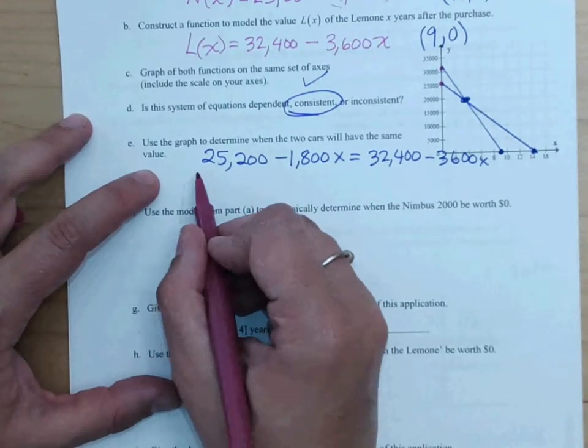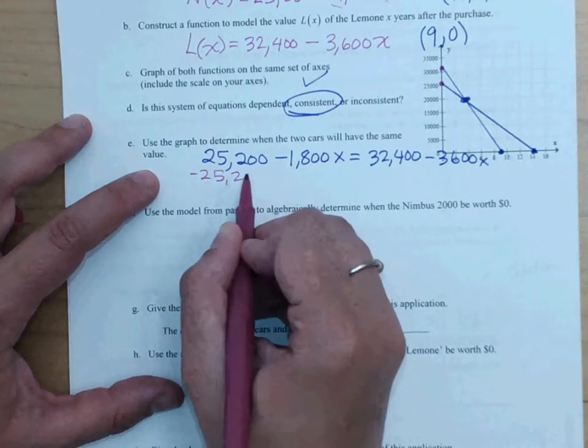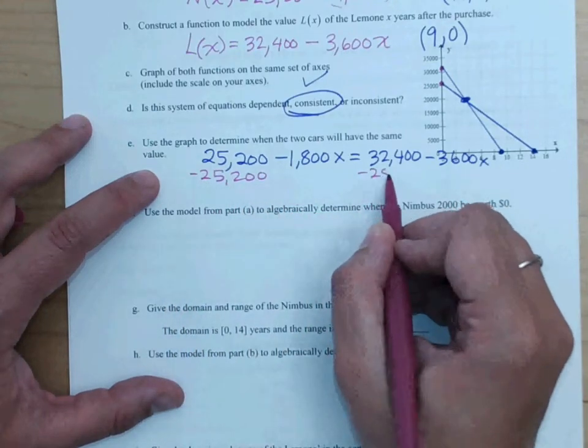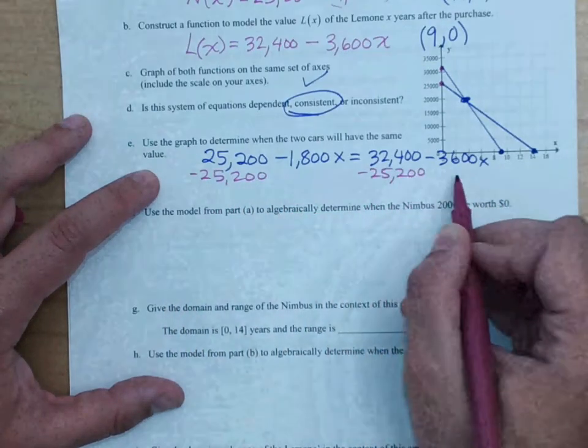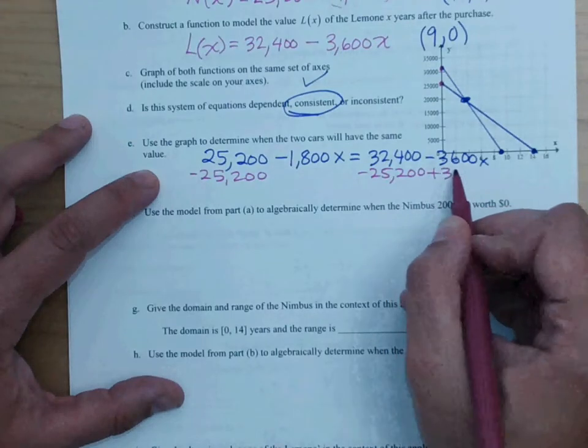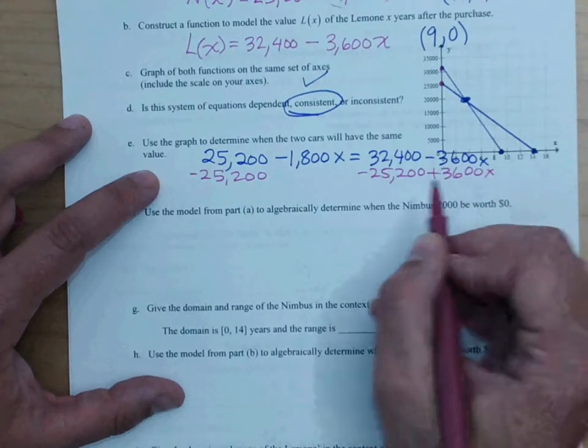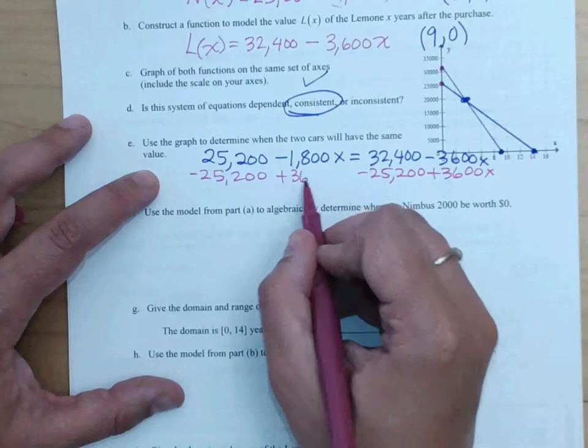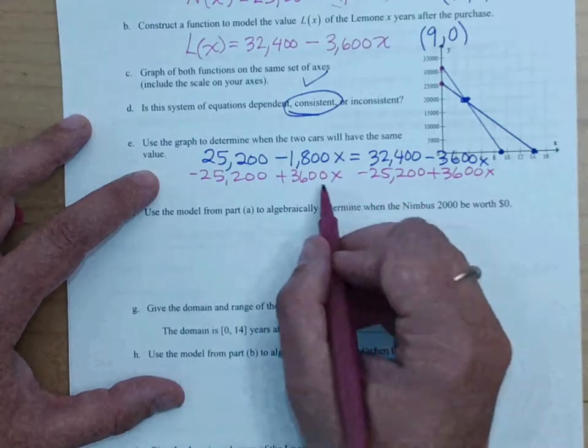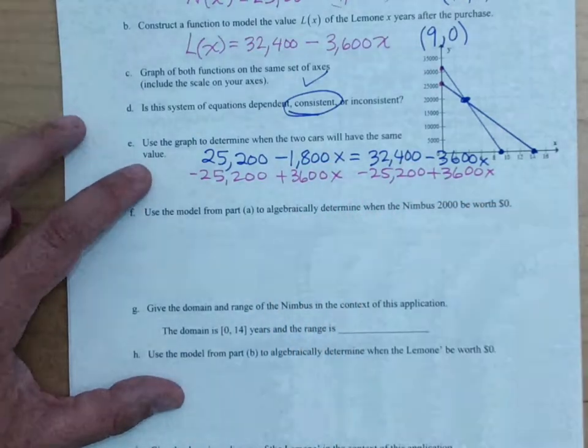So, subtract this value. So basically, essentially the difference. And then we're going to add that 3,600x, finding the difference in the depreciation, the difference in the starting values.